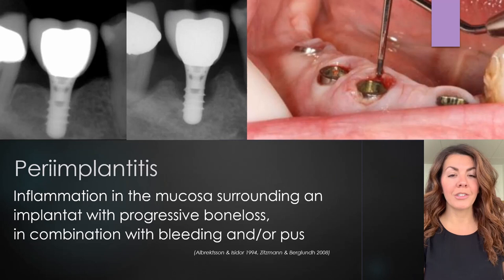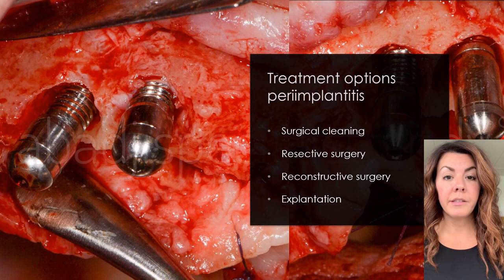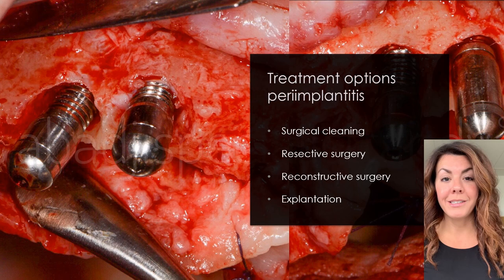Peri-implantitis is an irreversible condition. It's an inflammatory disease with progressive bone loss. There are several ways to treat peri-implantitis, but all of them are surgical. Non-surgical therapy usually has a very small effect when it comes to peri-implantitis. I have listed four types of surgical treatment that you can consider.